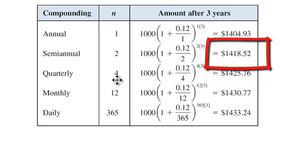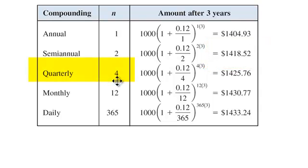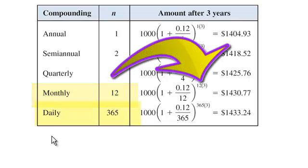And for quarterly, I will use 4 for N. Monthly, there are 12 months in a year, so I'm using 12. And daily, there are 365 days in a year, unless it's leap year.